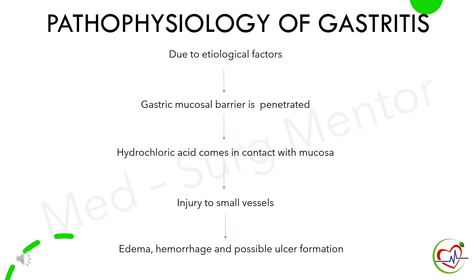Pathophysiology of gastritis: due to etiological factors such as Helicobacter pylori infection or medications, the gastric mucosal barrier is penetrated and damaged. As a result, hydrochloric acid — the gastric acid — comes in contact with the mucosa, which leads to injury to the small blood vessels. Gradually, these changes result in edema, hemorrhage, and possible ulcer formation.